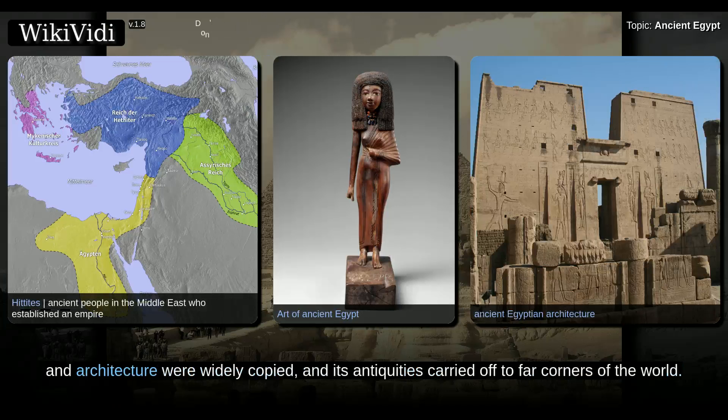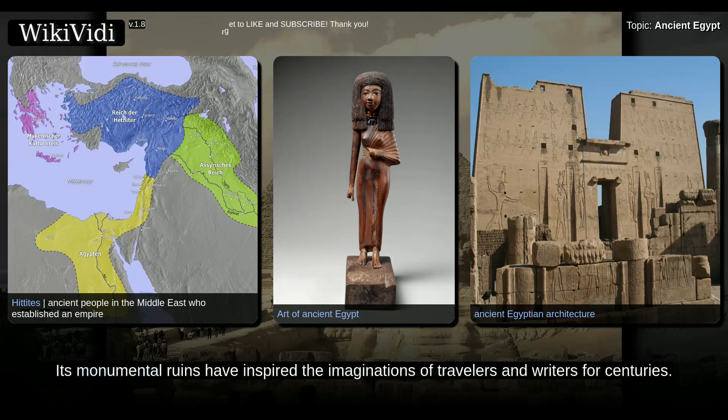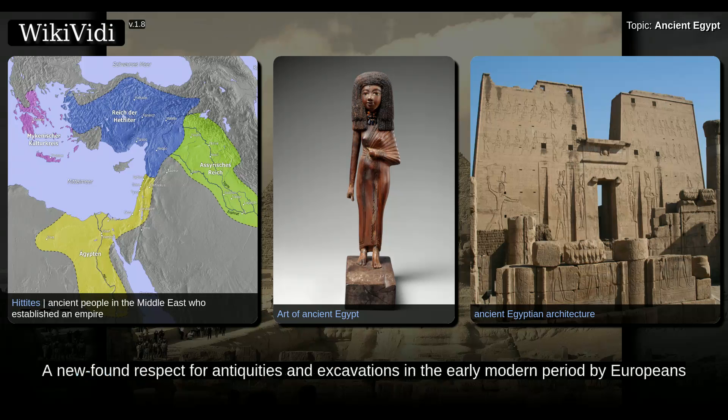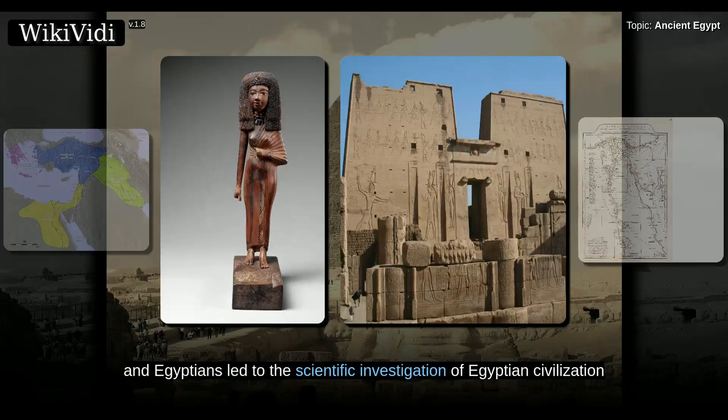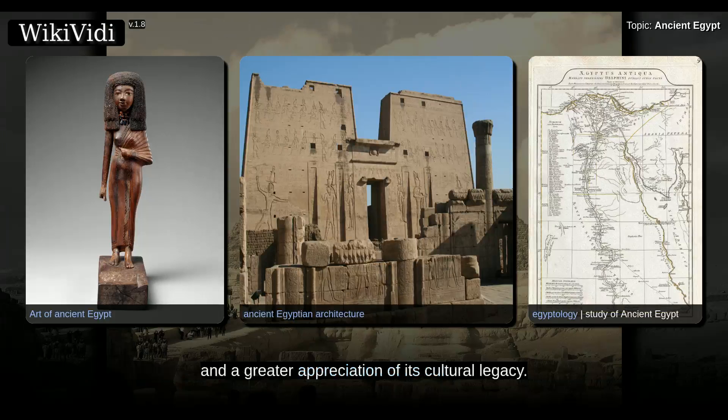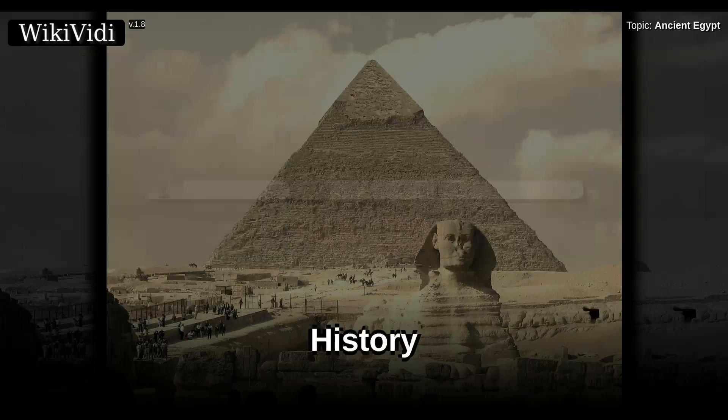Egypt left a lasting legacy. Its art and architecture were widely copied, and its antiquities carried off to far corners of the world. Its monumental ruins have inspired the imaginations of travelers and writers for centuries. A newfound respect for antiquities and excavations in the early modern period by Europeans and Egyptians led to the scientific investigation of Egyptian civilization, and a greater appreciation of its cultural legacy.